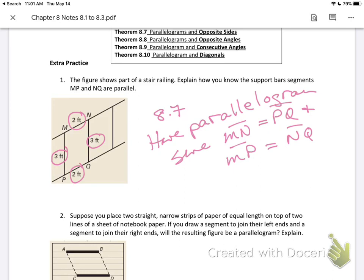Extra practice 2: Suppose you place two straight narrow strips of paper of equal length on top of two lines of a sheet of notebook paper. If you draw segments to join their ends, will the resulting figure be a parallelogram? The strips are equal length, and the notebook paper lines are parallel. So I have one pair of sides where AB equals CD, and they're parallel. Since they're equal and parallel, the resulting shape is going to be a parallelogram.